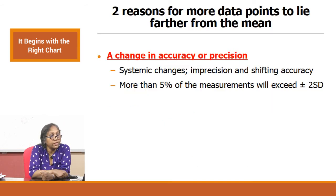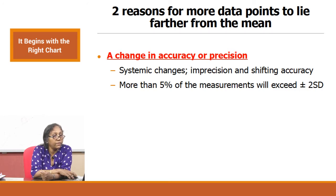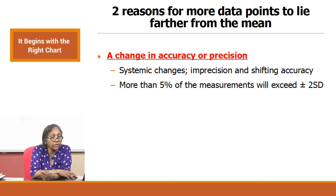There are two reasons for more data points to lie farther than the mean — systematic errors or random errors. A change in accuracy or precision will make systematic changes in precision and shift accuracy. These could make more than 5 percent of the measurements lie farther from your plus or minus 2 SD points.